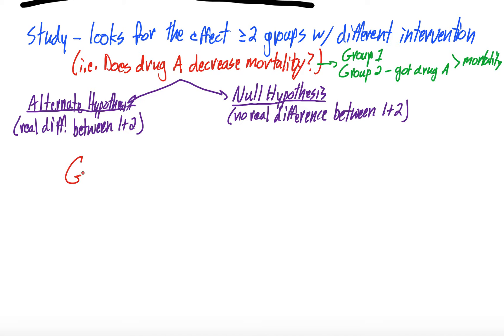But with this study question - does drug A decrease mortality - we have our two groups. Now let's say at the end of the study, group one, this was the group that did not get drug A, has an 8% mortality. And then group two, that did get drug A, has a 6% mortality. The question here is: is drug A responsible for that decreased mortality, or is this just random chance?